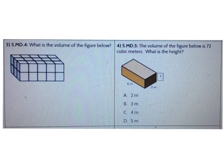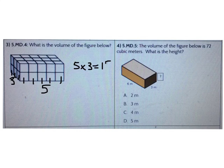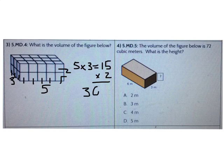Let's do another. What is the volume of the figure below? First, how many cubes are on each row of the bottom layer? There are 5. The width — how many rows are there? There are 3. I can multiply: 5 times 3 is 15 cubes on the bottom layer. How many layers are there? There are 2. 15 times 2 is 30 cubic units. Don't forget your units.